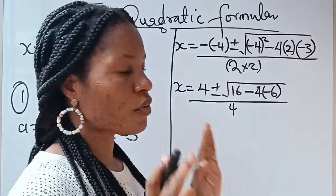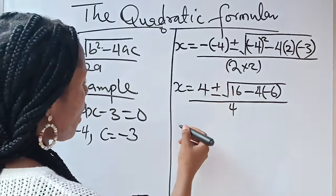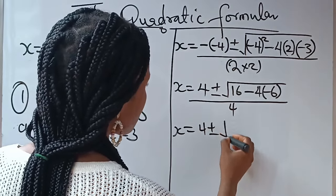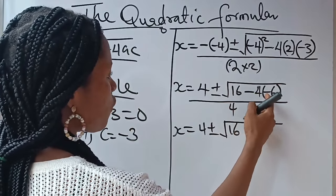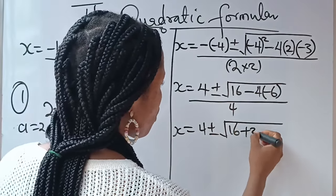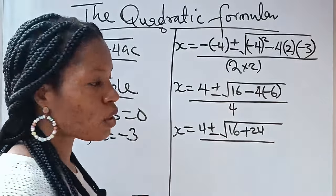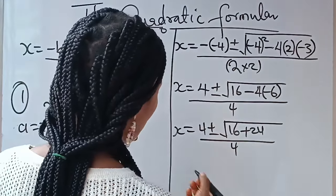Now, what do you have? Your x now is equal to 4 plus or minus square root of 16. Minus 4 times -6 will give you plus 24 because minus times minus will give you plus.